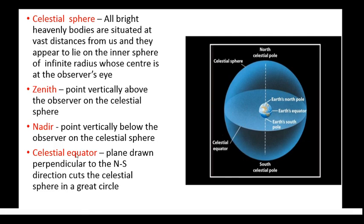The next term is celestial equator. You know the earth's equator — the earth having the north pole above and south pole below. Now we are having a celestial sphere which is also having a celestial equator. It is a plane drawn perpendicular to the north-south direction which cuts the celestial sphere in a great circle, and this great circle is known as the celestial equator.